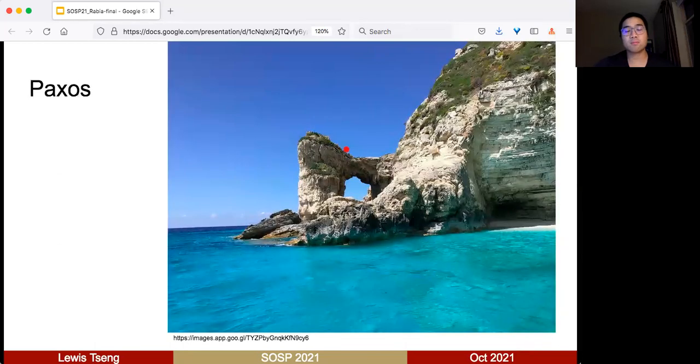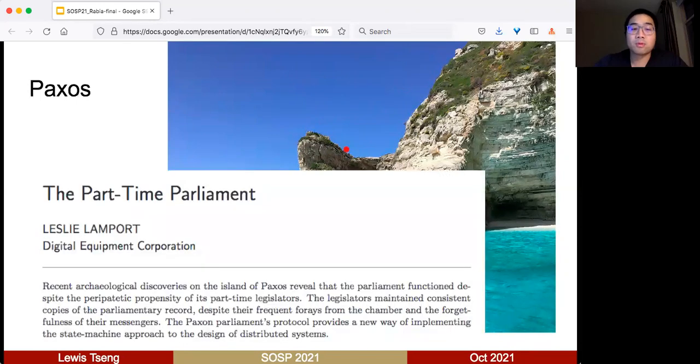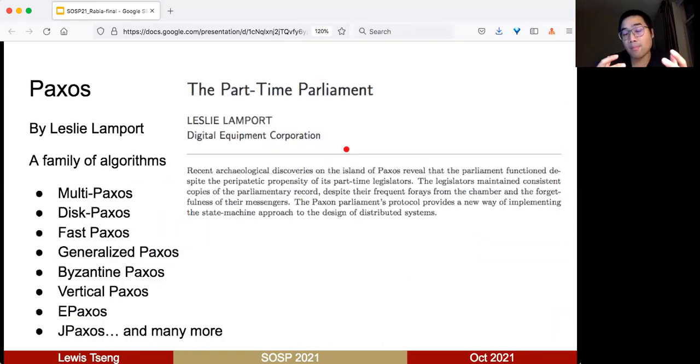One of the most popular protocols is Paxos—not the island, but the protocol proposed by Leslie Lamport. In fact, Paxos is so popular it can be viewed as a family of algorithms. There are tons of algorithms built on top of Paxos or inspired by Paxos. Here are some classic examples of the Paxos family.